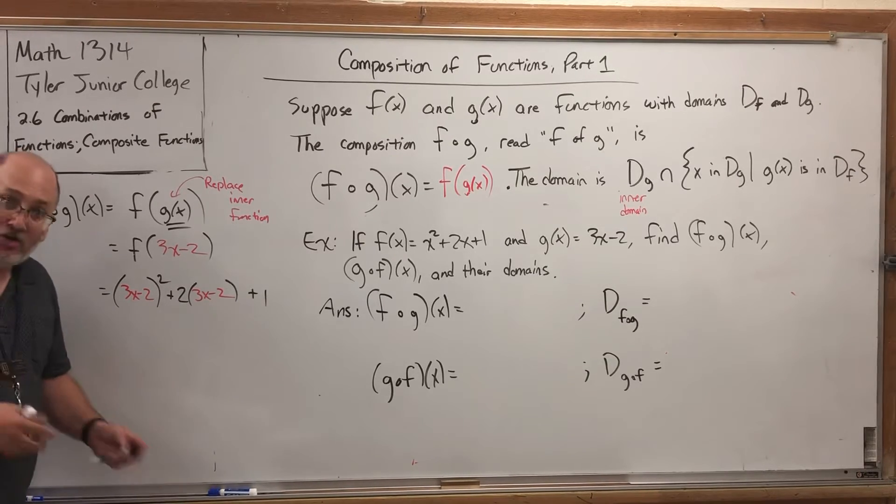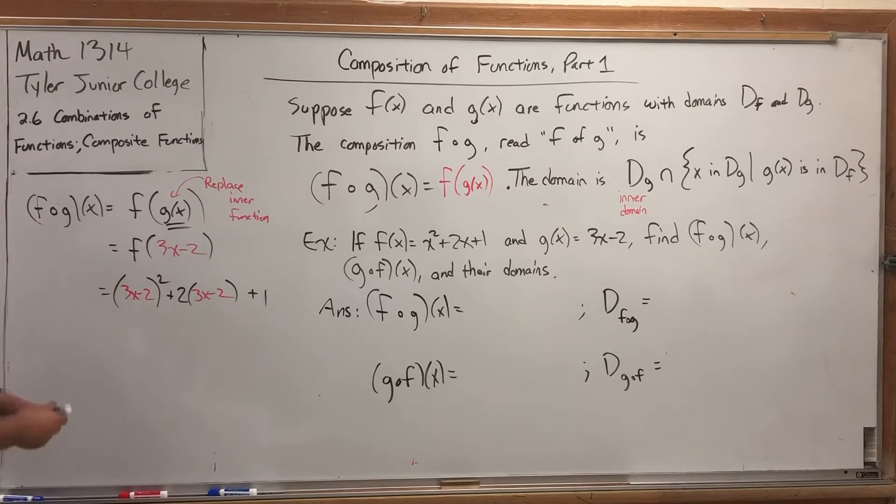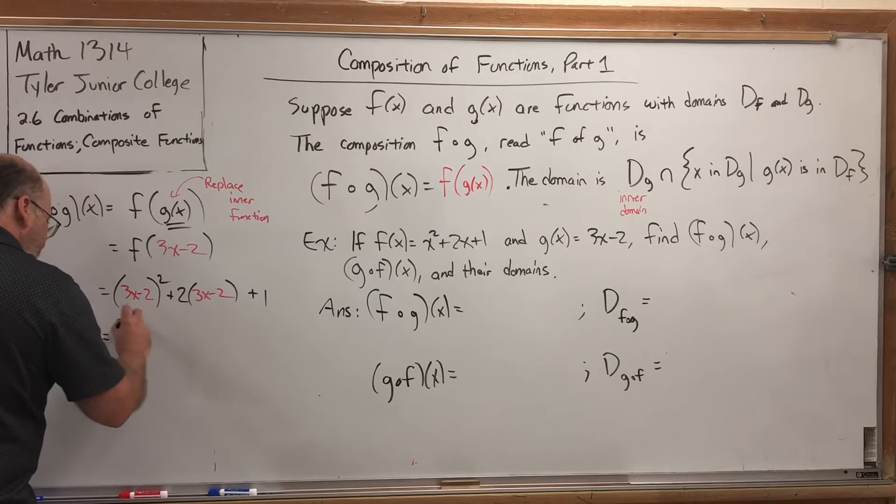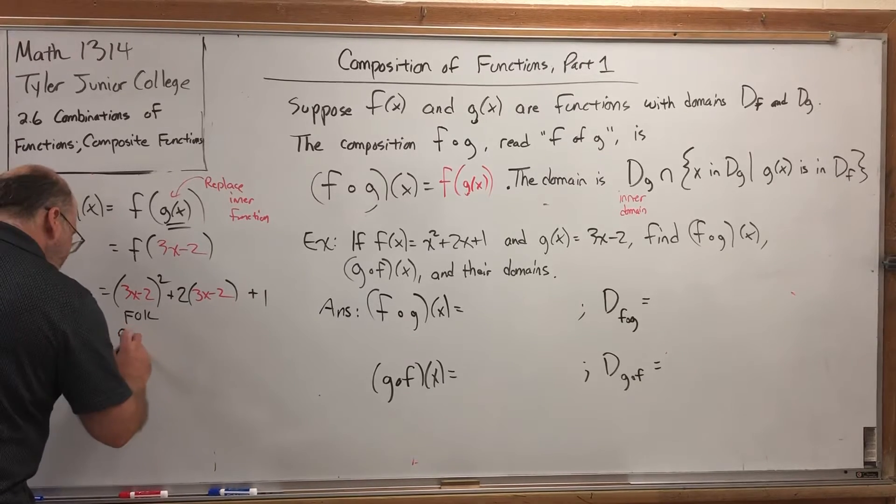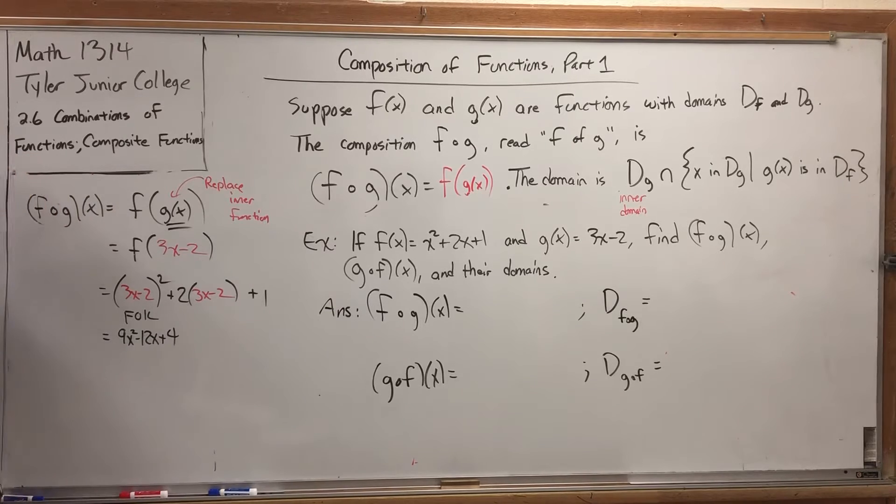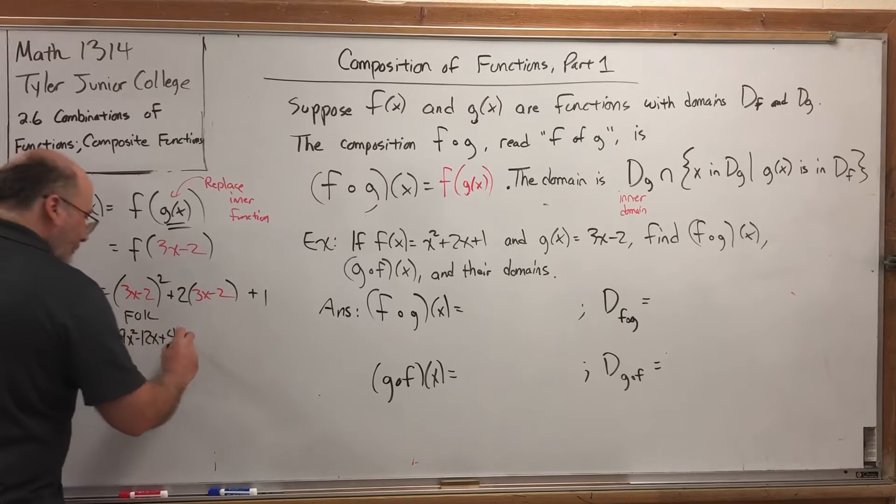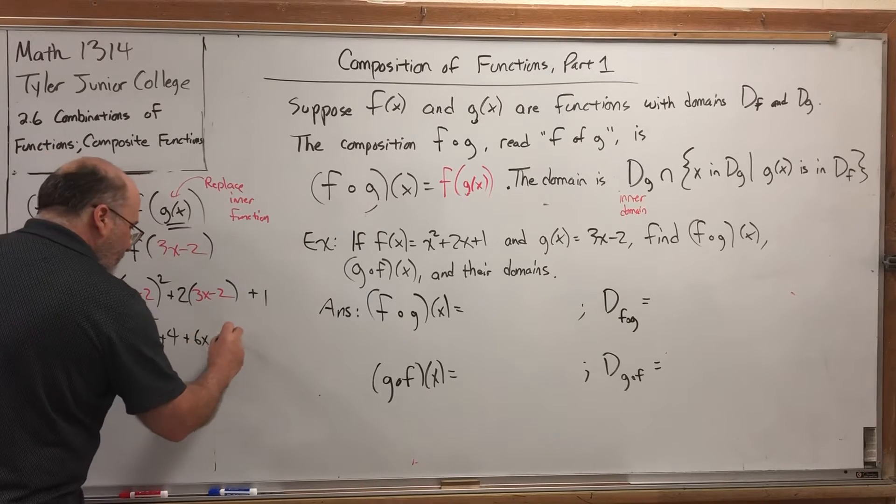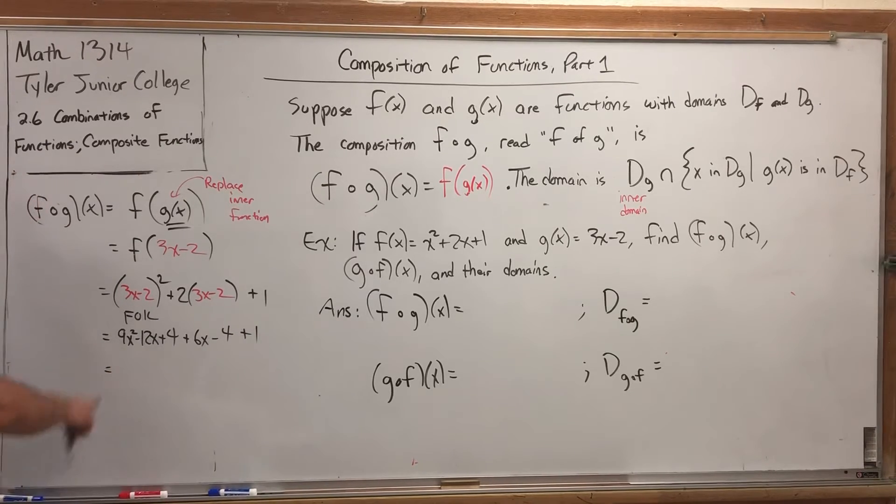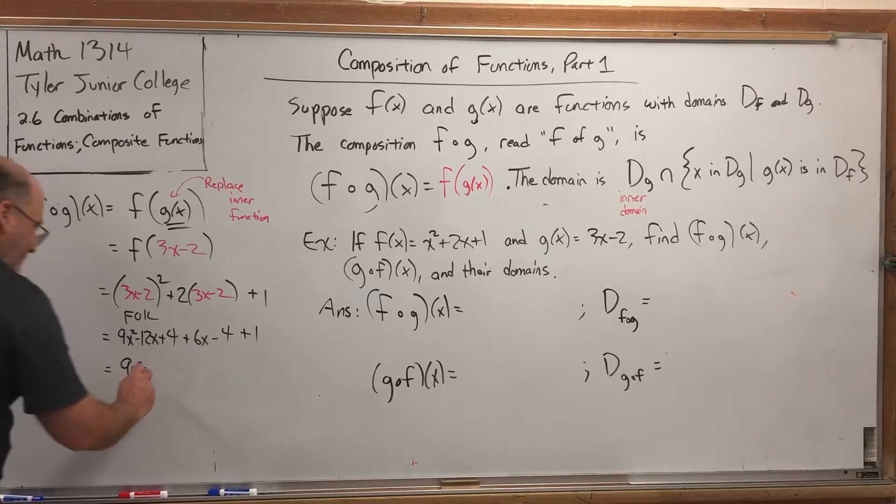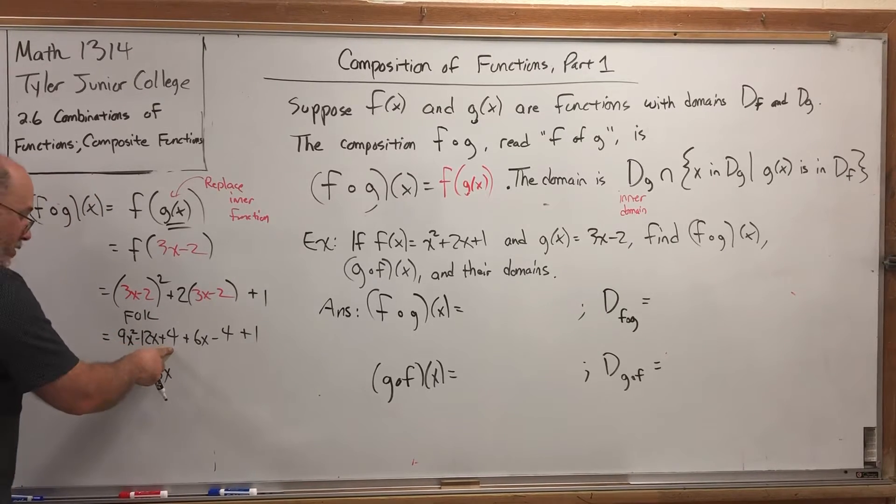At this point, we've technically created our function, but we don't like to leave things unsimplified. So, let's bust open these parentheses and clean things up. The first parentheses is a foil problem. So, if you wrote the parentheses twice and then foil it out, you would get 9x² - 12x + 4. The second set of parentheses just invokes the distributive property. So, positive 2 times 3x is positive 6x. Positive 2 times negative 2 is negative 4. And then we have a plus 1. And so, now we just have to gather everything. This is the only x² term, so 9x². We have a minus 12x and a plus 6x, so that's minus 6x. And then we have plus 4, minus 4, those cancel, plus 1.